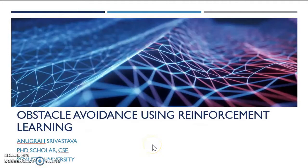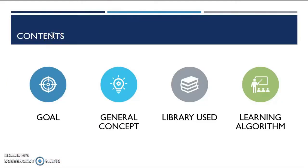So let us understand the idea behind the project. My project title is Obstacle Avoidance using Reinforcement Learning. The basic goal of the virtual self-learning robot car is to drive around an environment for as long as possible without hitting anything. The contents cover: the basic goal, general concepts, libraries used, and the learning algorithm.